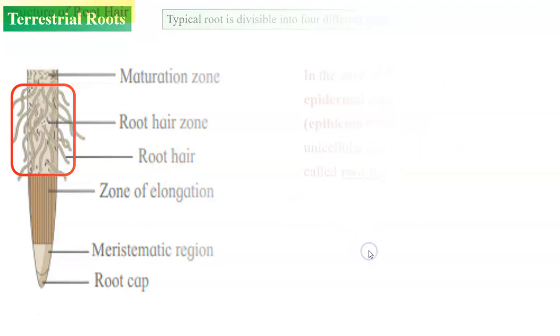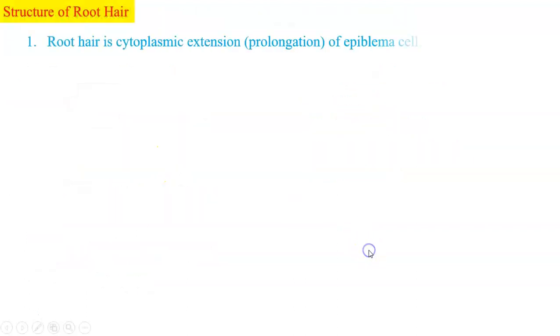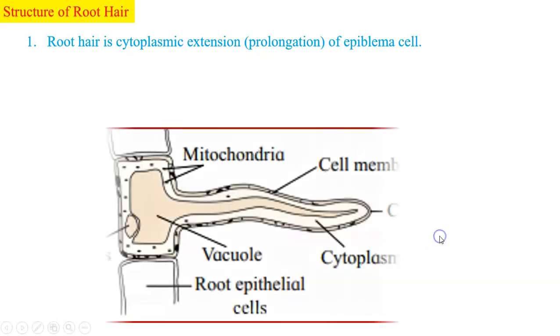Let us understand the structure of root hair. As we said earlier root hair these are cytoplasmic extensions of the epidermal cells of root. They are called epiblema cells.